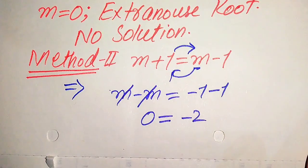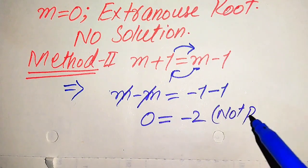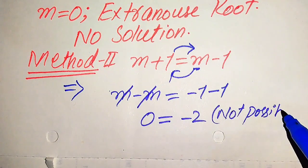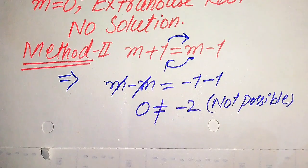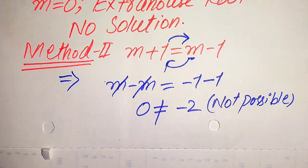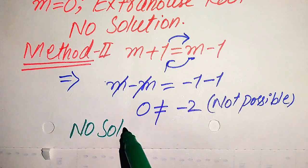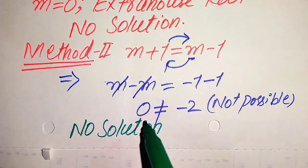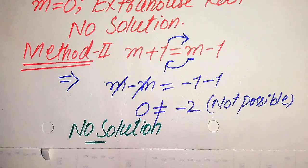We see that 0 = −2 is again not possible. It is not possible that 0 equals −2. This means we cannot find any value of m which satisfies the given equation. Therefore this question has no solution. Thank you so much for watching this video — please subscribe to my channel for more exciting videos.